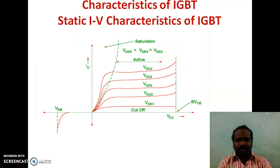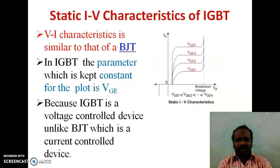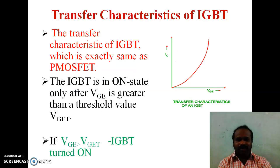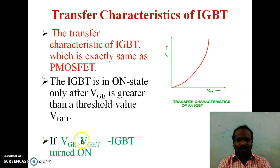This diagram shows the static V-I characteristics of IGBT, which are very similar to those of the BJT. This is the transfer characteristics of IGBT, which are exactly the same as MOSFET. When the gate-to-emitter voltage is greater than the threshold level VGE(T), the IGBT will turn on.